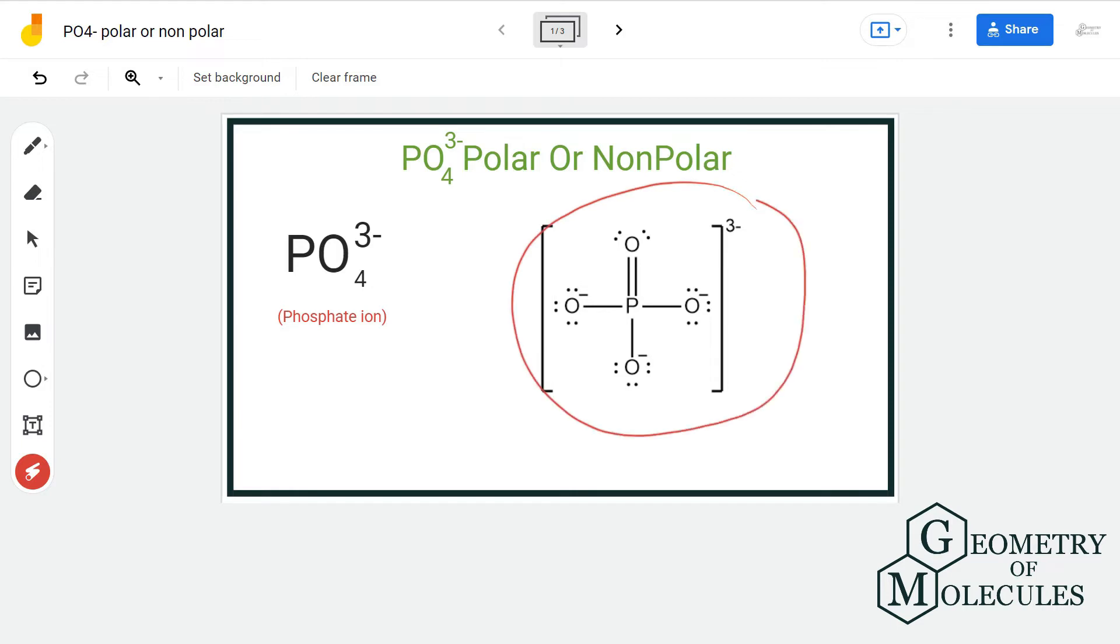So if we look at the Lewis structure of phosphate ion, four oxygen atoms are forming bonds with the central phosphorus atom. If you look at it, you might think that it is asymmetric in nature as there is a double bond here and there are single bonds here.